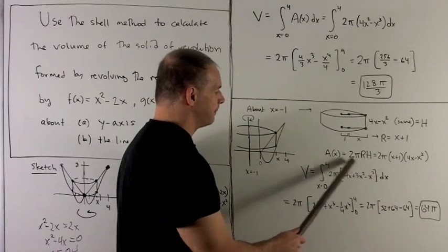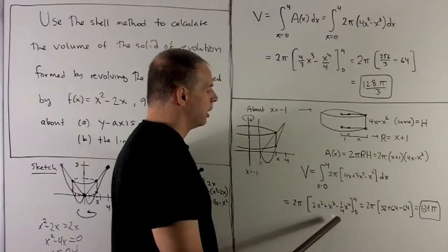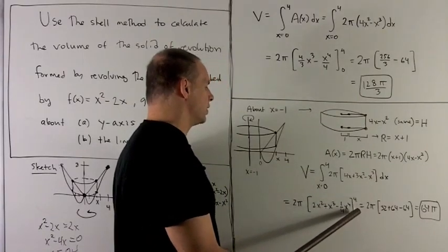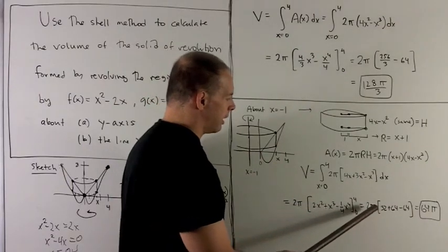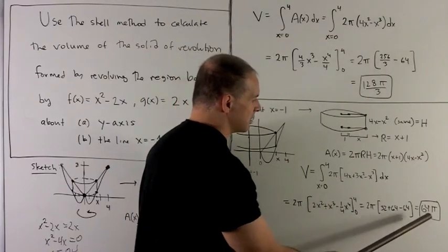So we're going to take the antiderivative of this thing, done there. So I'm going to go from 0 to 4. The 0 goes in, has no effect. So we're just going to put a 4 in there. My numbers come out, and we see that we get 64π.